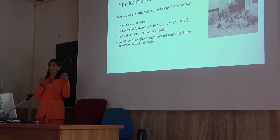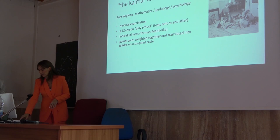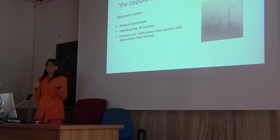There were no standardized tests, so different tests existed. Two examples show how different they could be — they were usually called after the town in which they were developed. The Kalmar test, developed by mathematician Flitsvig Fosch, was a very long test involving a medical examination, a 12-lesson play school observation, individual tests, and points calculated together. The Uppsala test, developed by a teacher, was done in just 45 minutes but had both a test instructor and an observer watching the child throughout.